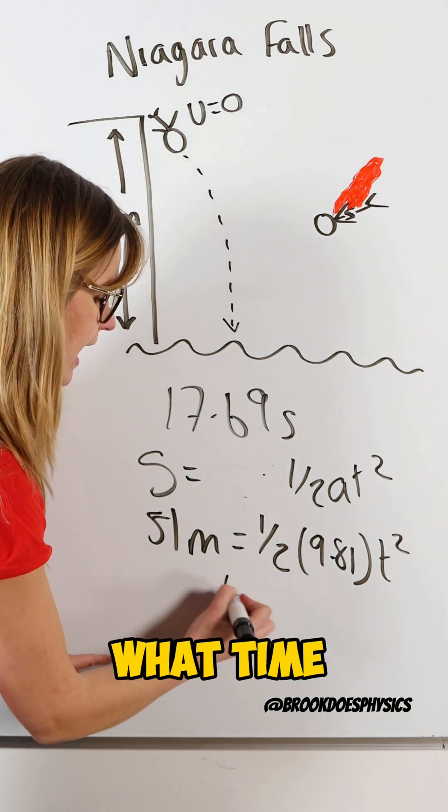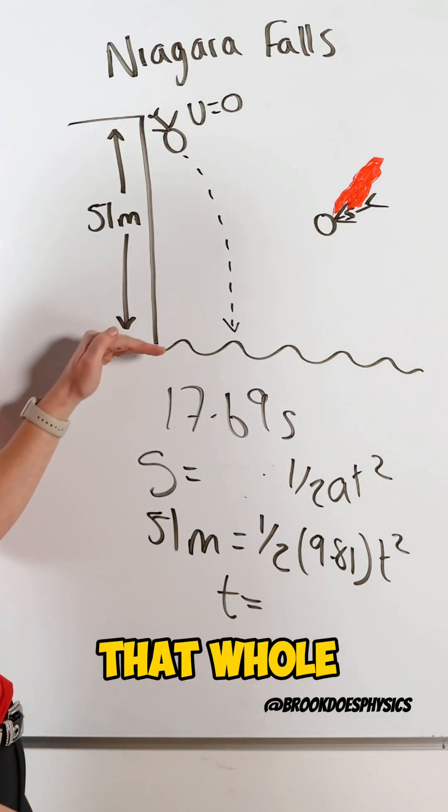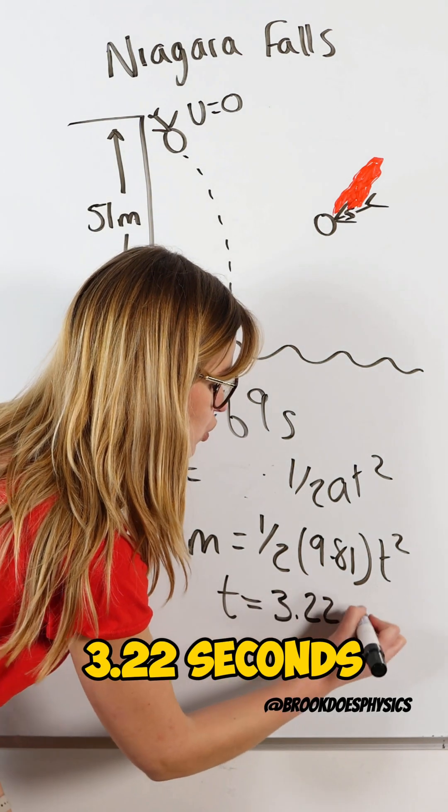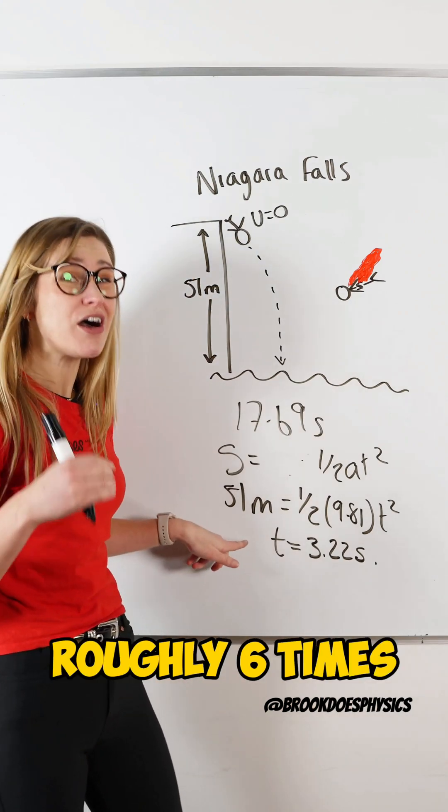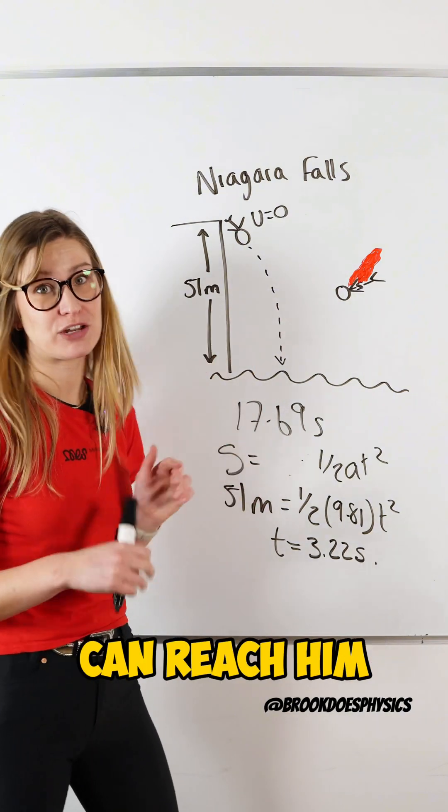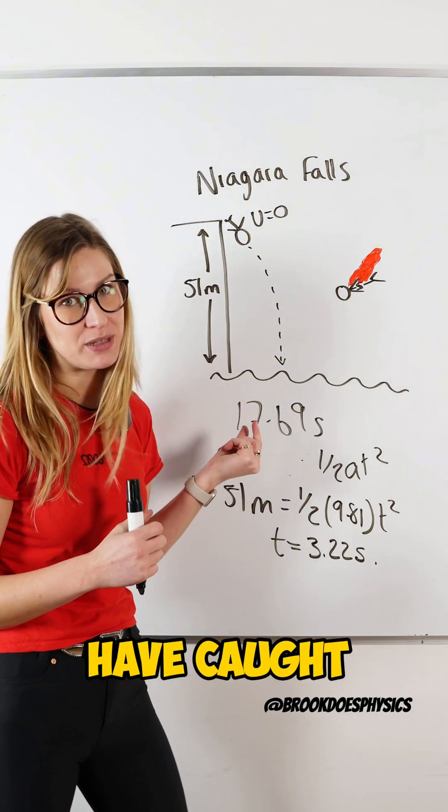If we do this math to find out what time it would have taken him to drop that whole distance and hit the water, the time comes out to 3.22 seconds. This is roughly six times faster than Superman can reach him. So Superman never could have caught him in time.